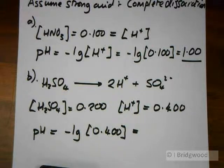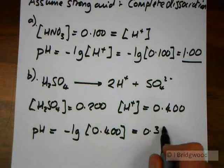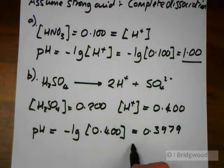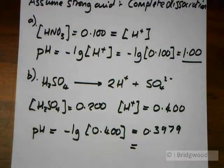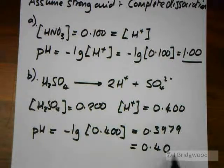Negative log of 0.4 gives me a value of 0.3979, which we can round to 0.40.